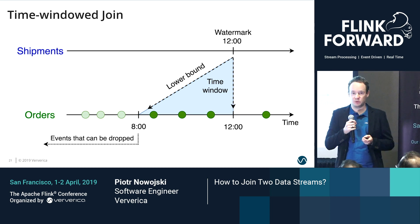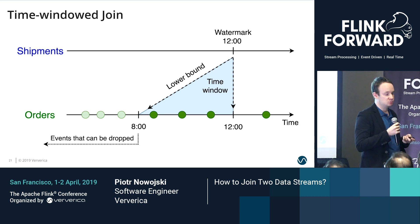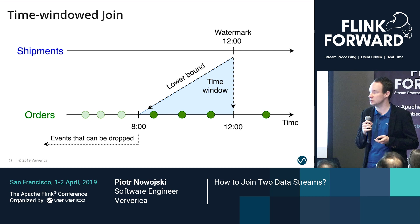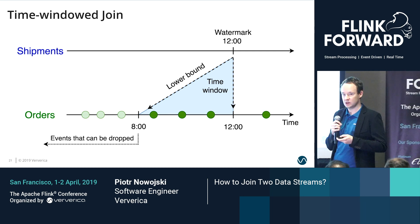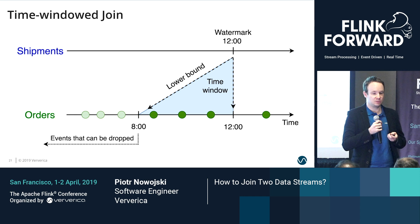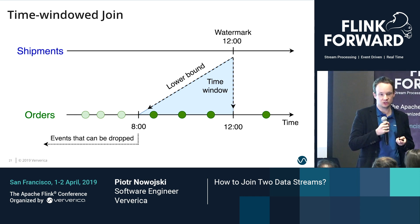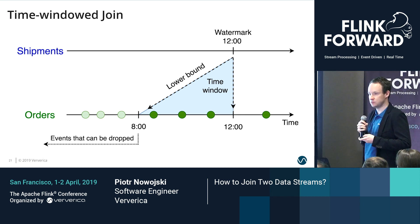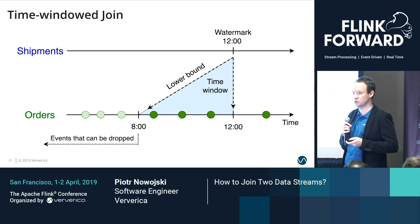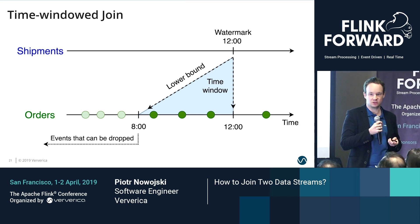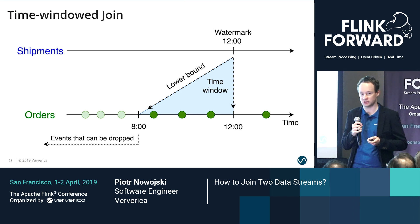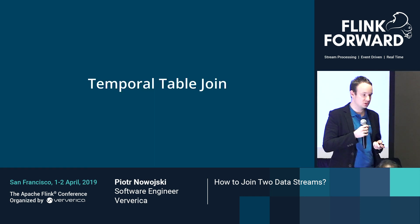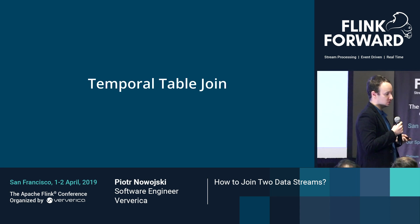Now we solve the memory consumption problem — it is restricted to something depending on our input characteristics. However, the problem is that this semantic is not suitable for every business logic. For example, sooner or later every record will finally fall out of the time window and will not be able to participate in future join results. That's why we introduced another approach to solve this problem.